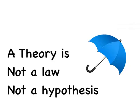In order to understand the cell theory, the first thing you need to know is that a theory is not the same thing as a law and it's not the same thing as a hypothesis. Laws and hypotheses are both very narrow and they describe specific circumstances. A theory is more of an umbrella, and because it's an umbrella, it describes broad observations made by many scientists over many years.